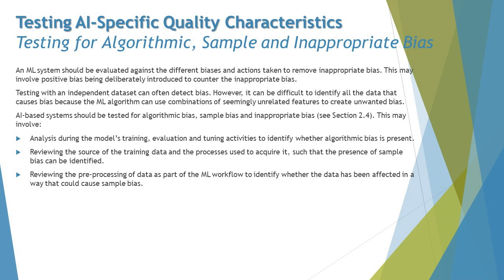An AI-based system should be tested for algorithmic bias, sample bias, and inappropriate bias, as discussed in section 2.4. This may involve analysis during the model's training, evaluation, and tuning activities to identify whether algorithmic bias is present. Right in the workflow — covering algorithmic definitions, model training, evaluation, and tuning — helps you find algorithmic biases much earlier than typical ML model testing.